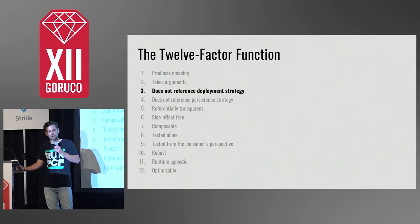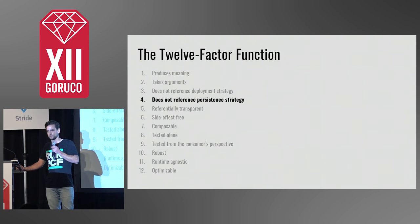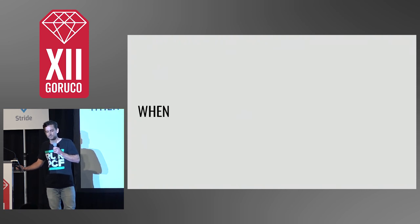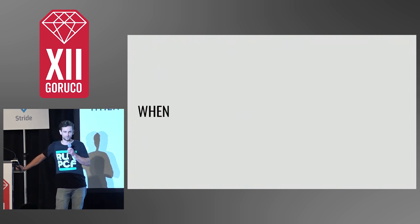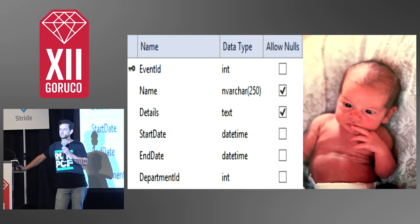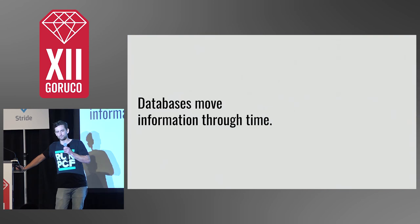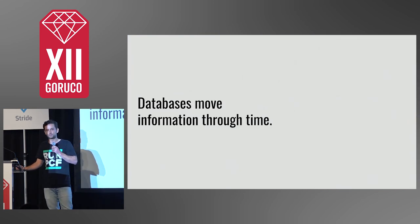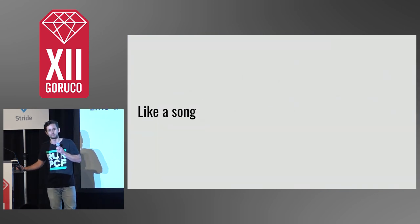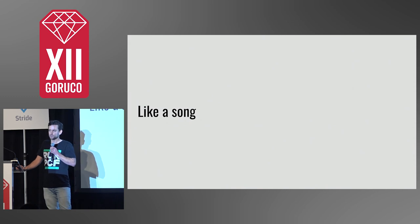So our function shouldn't care how we deploy it — it also shouldn't care how we persist the inputs and outputs. Persistence strategies are about when we consume information. Databases, like networks, don't add meaning. They just move information through time.